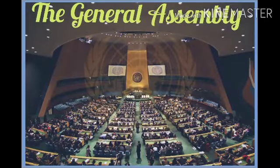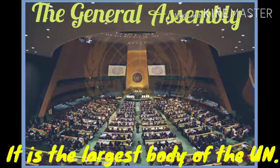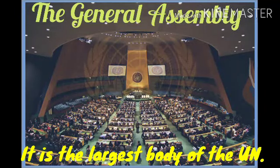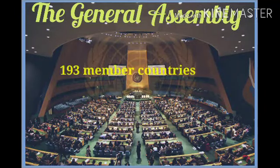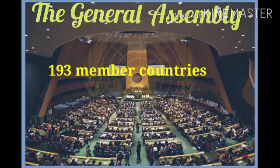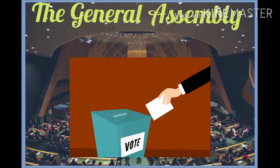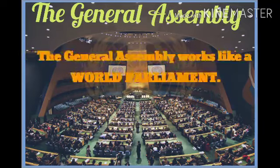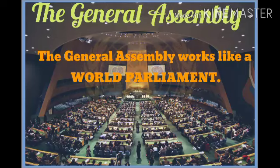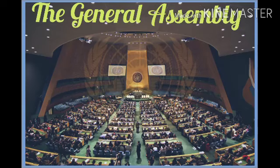First, the General Assembly. The General Assembly is the largest body of the United Nations. It is made up of 193 member countries. Each country has one vote. The General Assembly works like a world parliament. It provides a platform for countries to put forward their ideas and issues. It meets once a year to take important decisions.